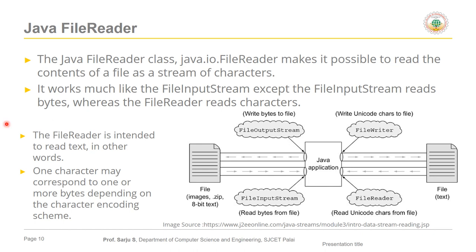FileReader works similarly to FileInputStream. The FileInputStream class was used in the previous lecture to read data from a file in byte form. Similarly, FileReader reads data from a file but in the form of characters. Any type of character format or size can be handled using FileReader. In Java, Unicode uses two bytes to represent character data.